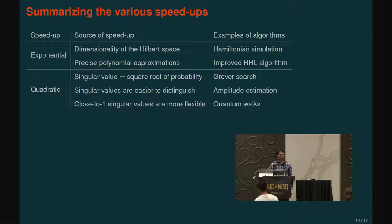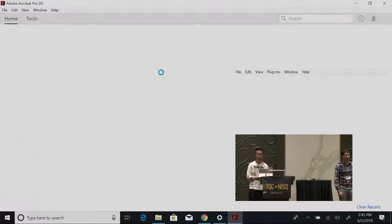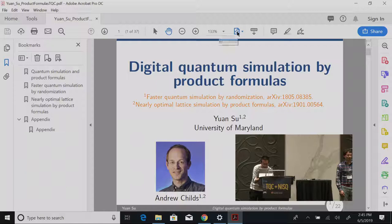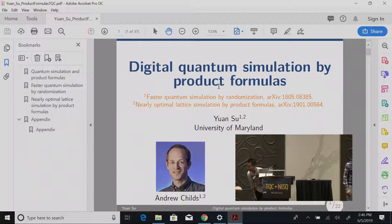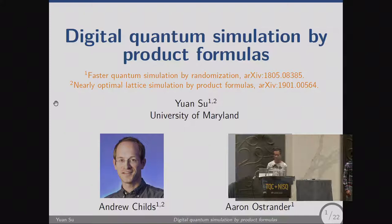Another question: QSVT is defined for even or odd polynomials — by considering combinations or products, is it possible to generalize to arbitrary polynomials or rational functions? In the general case of singular value transformation applied with an even polynomial, the new decomposition will be symmetric: the left and right singular vectors become the same (the left ones get replaced by the right ones). For Hermitian matrices this doesn't matter, but for arbitrary matrices it does. You can do some tricks to handle this, but it can be expensive.